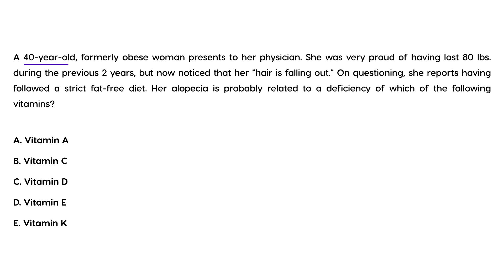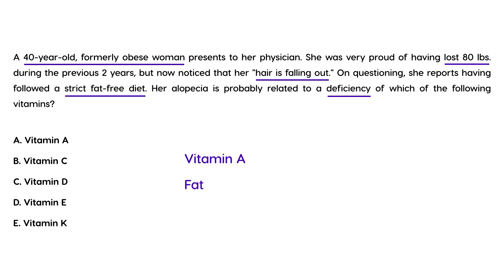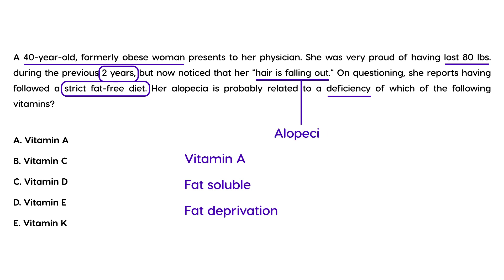For the second vignette: a 40-year-old formerly obese woman is proud of losing 80 pounds over two years, but notices her hair is falling out. She followed a strict fat-free diet. Since vitamin A is a fat-soluble vitamin, you need fat to absorb it properly. In a state of fat deprivation, any vitamin A obtained from food would not be absorbed — that's why she developed alopecia. So the answer is vitamin A.